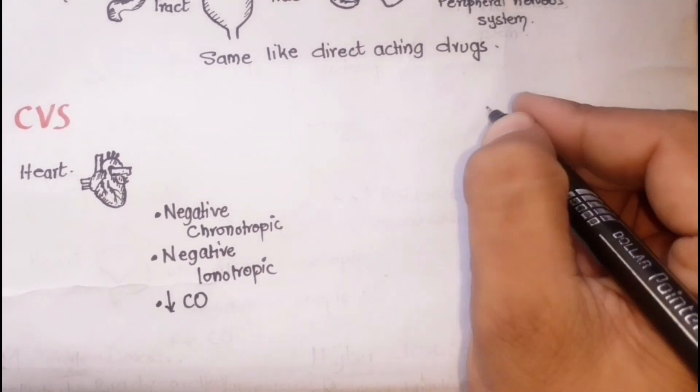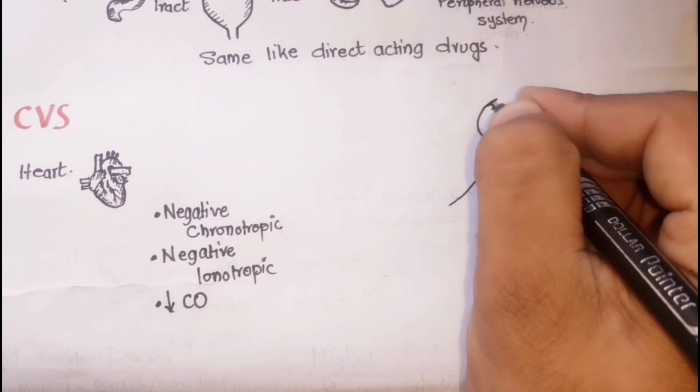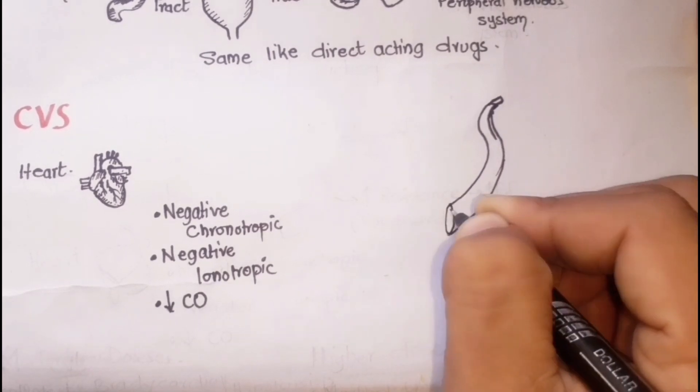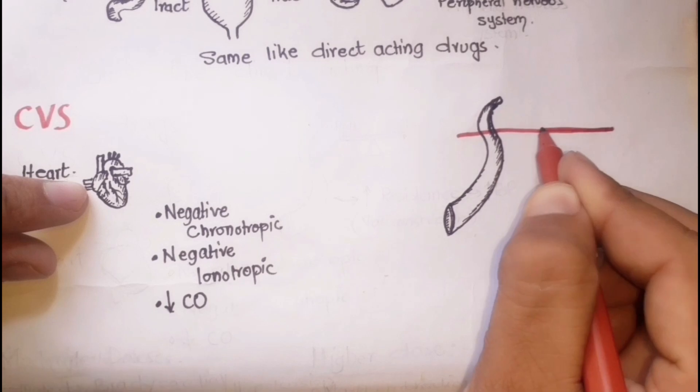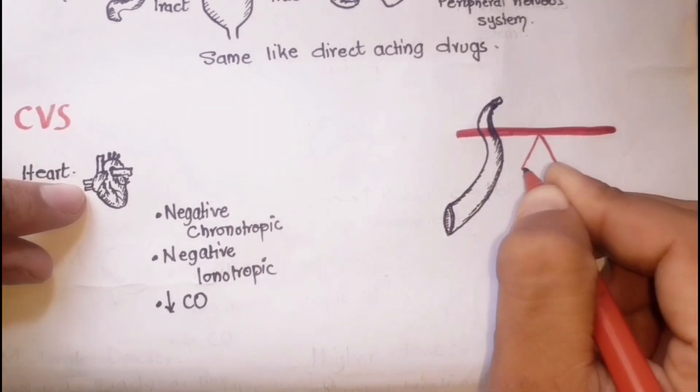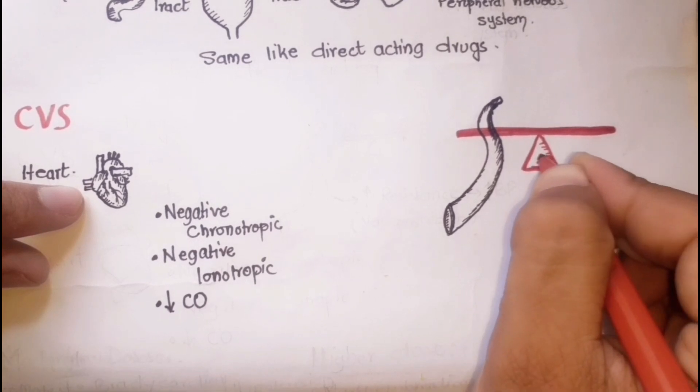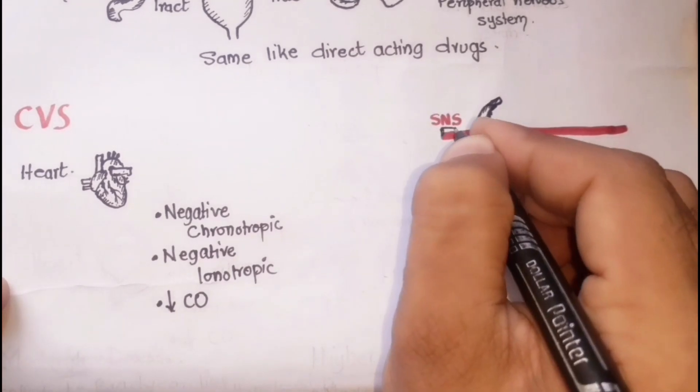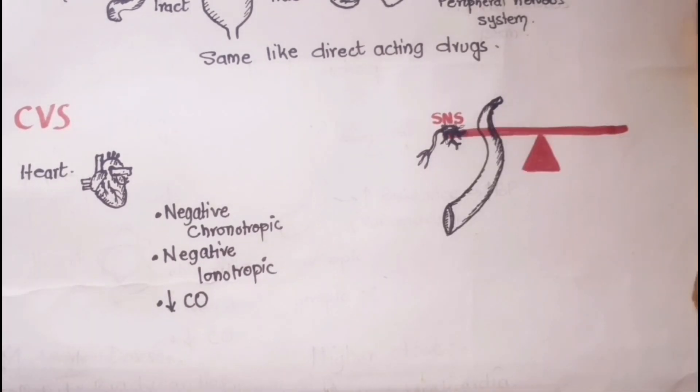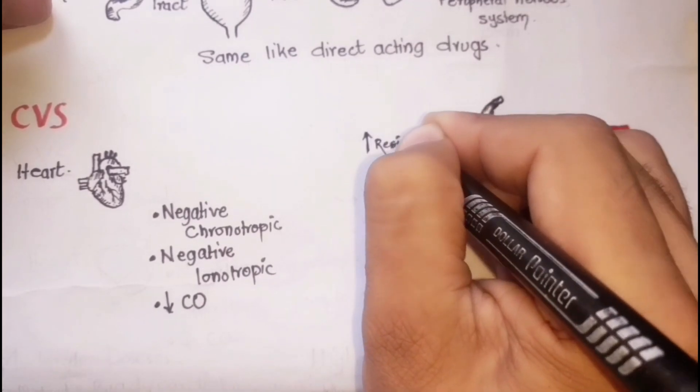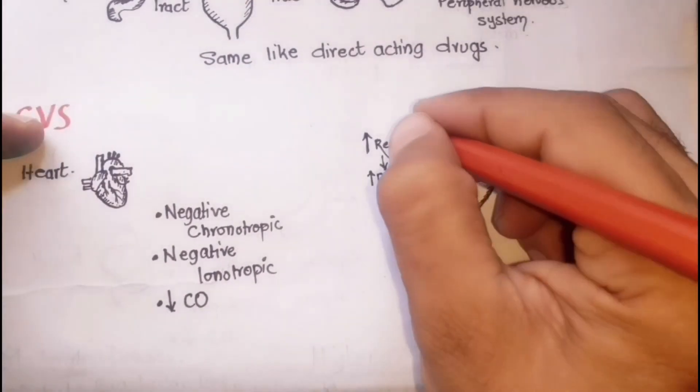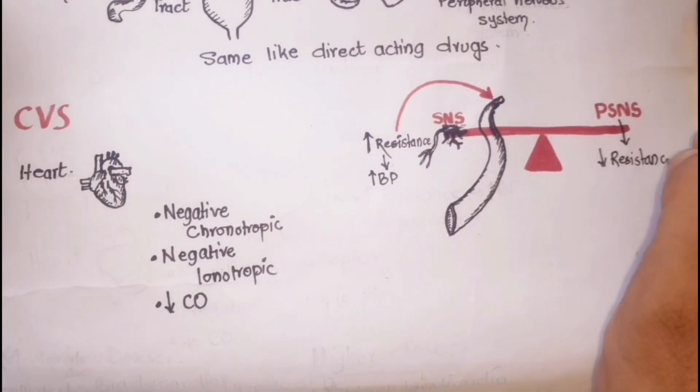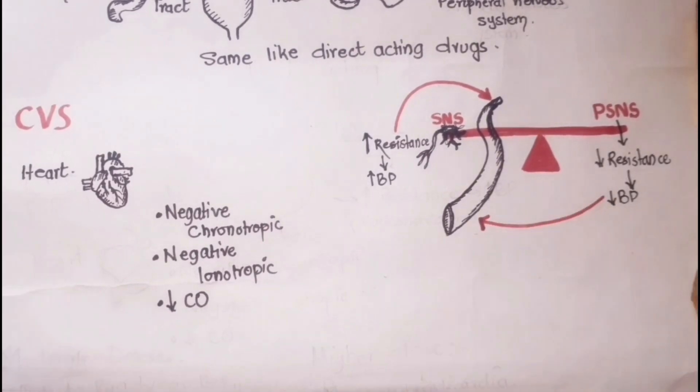Then we have to discuss the effects on the blood vessels. The effects of anticholinesterases on blood vessels are less visible than that of the direct-acting agonists, and it also depends on the balance of sympathetic and parasympathetic nervous system. For example, activation of sympathetic ganglia tend to increase vascular resistance and blood pressure, while activation of parasympathetic ganglia tend to decrease vascular resistance and blood pressure.